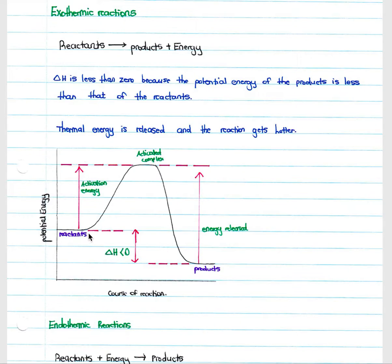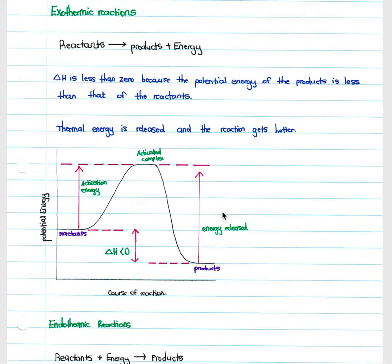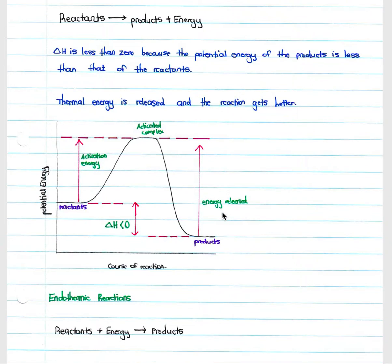The energy required to reach the activated complex is always the activation energy. The difference between the activated complex and the products is the energy released. In an exothermic reaction, less energy is absorbed as activation energy than is released in forming products, resulting in a net release of energy.